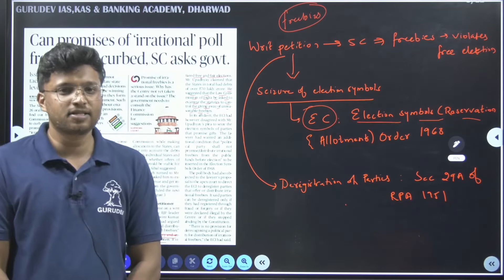Moving ahead, the third Vande Bharat train has been launched. In the recent budget, the government said that in the next three years we are going to have 400 Vande Bharat trains. Right now there are two running — Delhi to Katra and Delhi to Varanasi. The third Vande Bharat train will run in South India; the location has not yet been mentioned. The Vande Bharat train is also called Train 18.